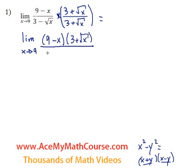And down below, we have 3 minus root x times 3 plus root x. In the next step, I'll expand this. But I won't expand the top. Just leave it as is.